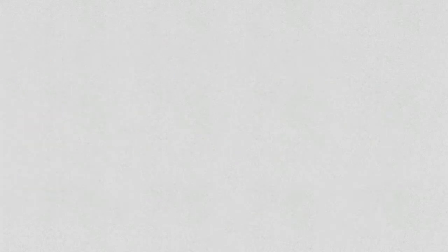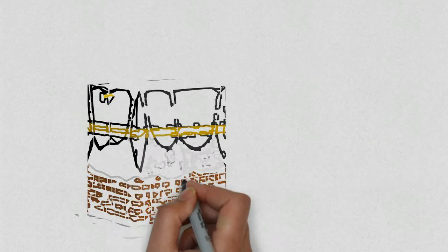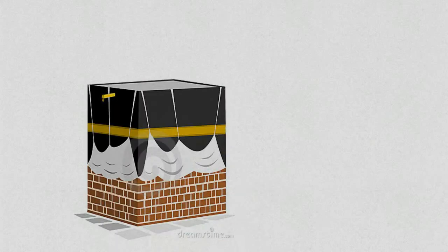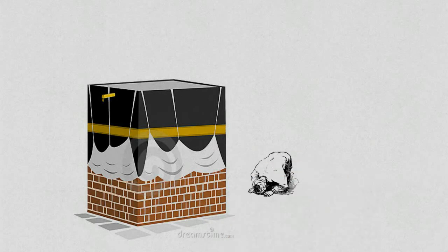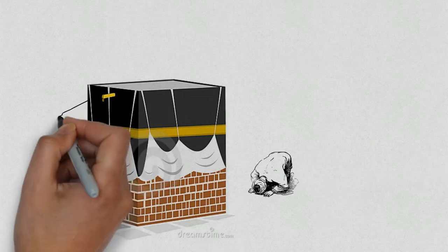During this year also Malcolm went for the holy pilgrimage to Mecca known as Hajj, a religious obligation every orthodox Muslim fulfills if humanly possible at least once in his or her lifetime. During the Hajj, Malcolm was open to a new Islam which he had never seen before.